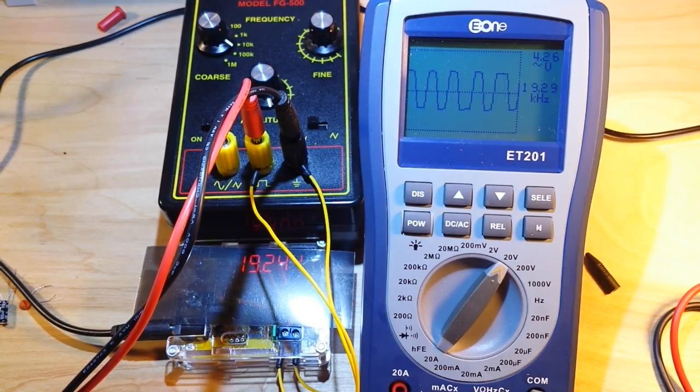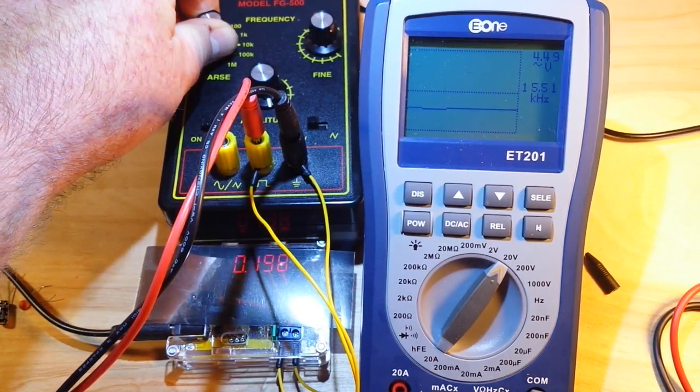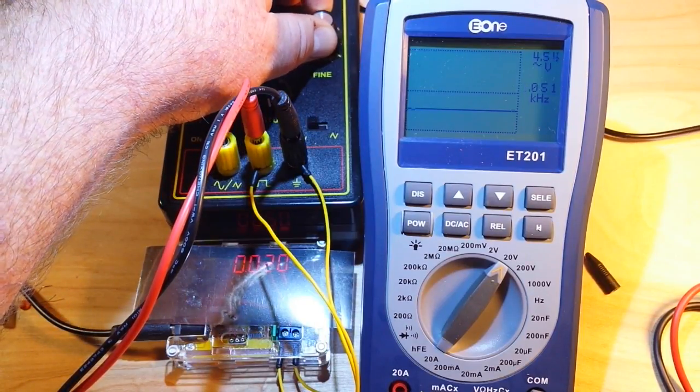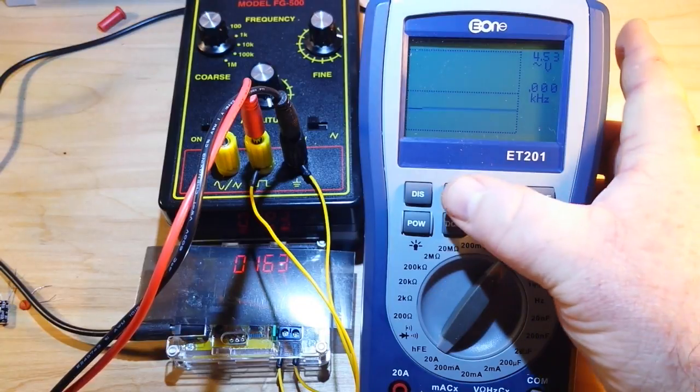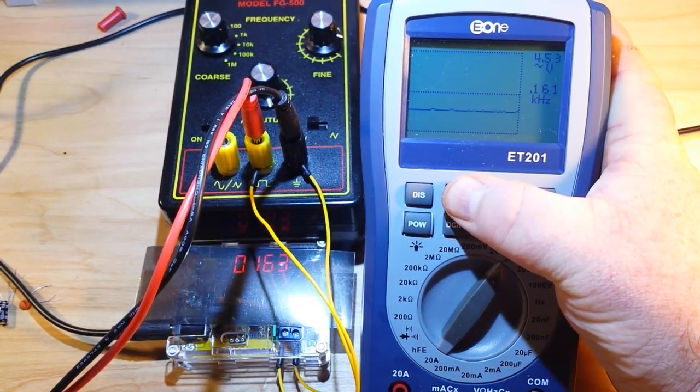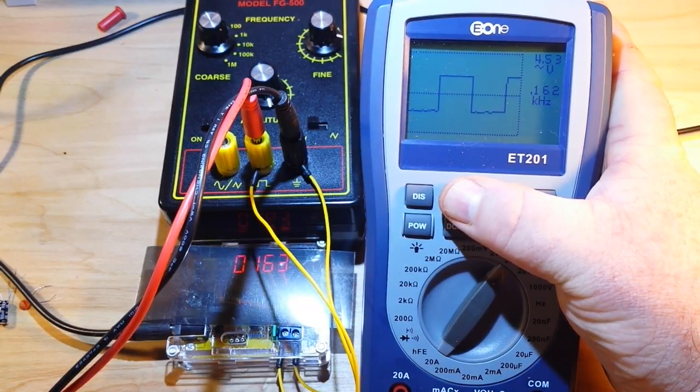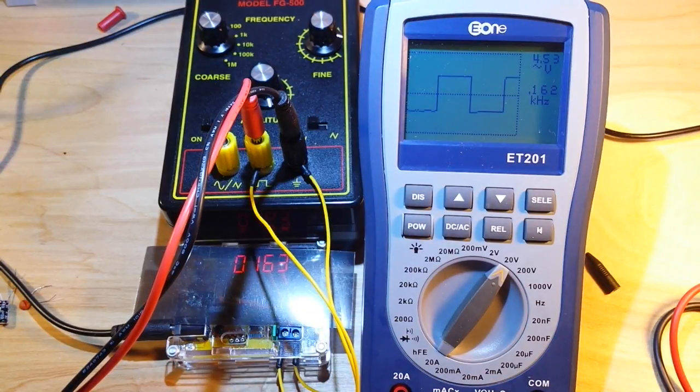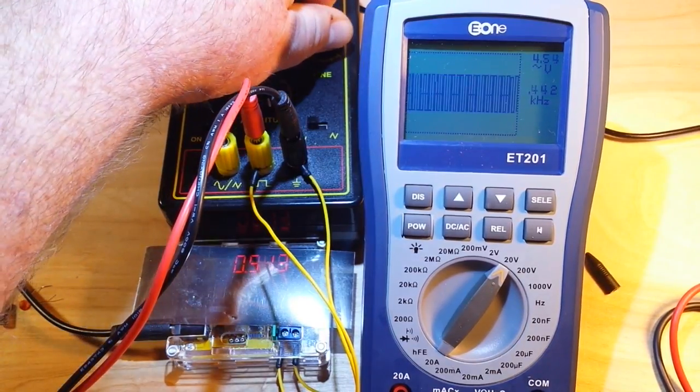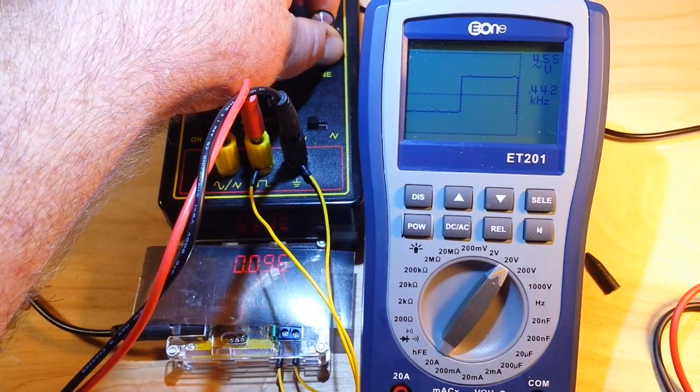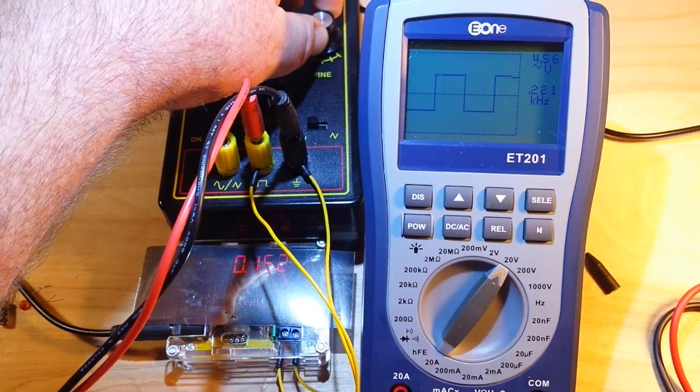Now, the rise and fall times are not spectacular, and well, it's definitely usable. Alright, let's slow her way down here. There's 163 Hz. Alright, now we have vertical rise and fall times, and flat tops and bottoms. So, let's take it up here, right around 1kHz, and see what we're getting.